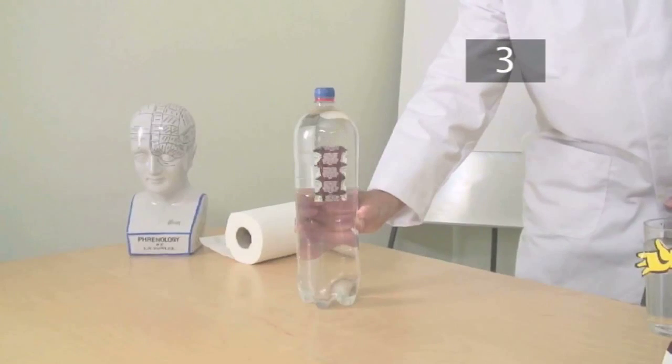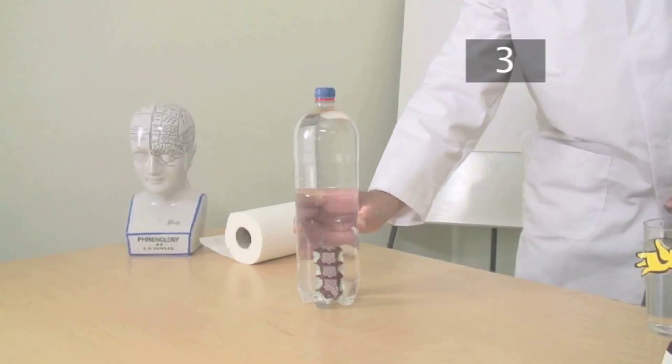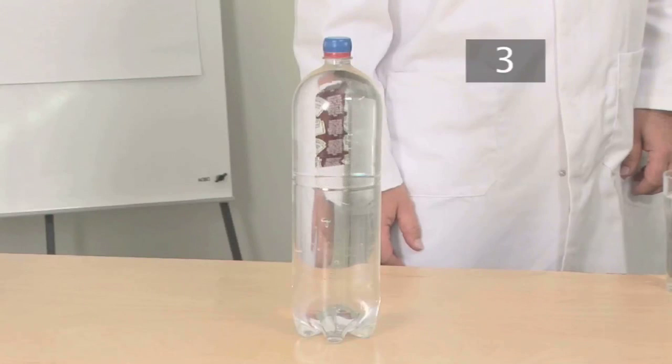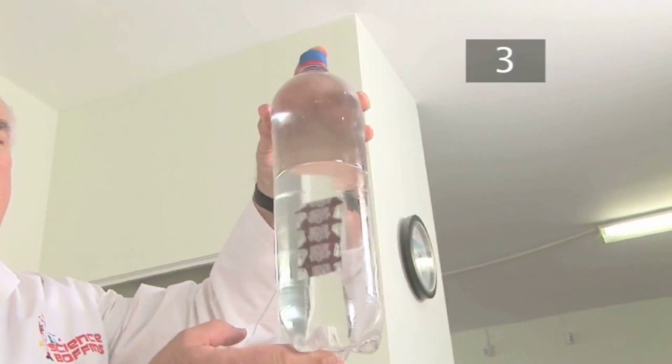Now squeeze the bottle and see what happens. The sachet will dive to the bottom of the bottle. Now let go and watch it swim back up to the top again. Try squeezing it harder. It dives even faster.